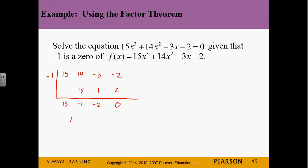So, what do we get? 15, 15 times negative 1, negative 15, negative 1, positive 1, negative 2, positive 2, no remainder. So, this gives us 15x squared minus x minus 2. And it's equal to zero still. Because all I did was pull out one of the factors.